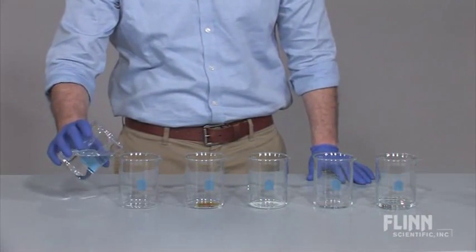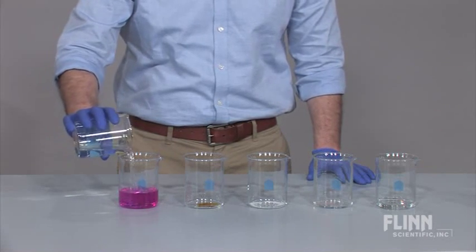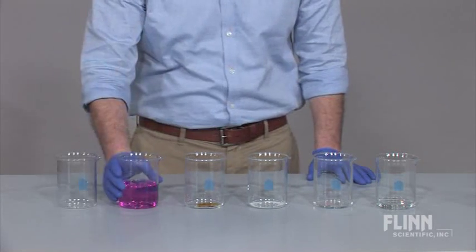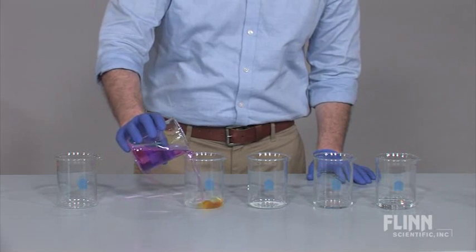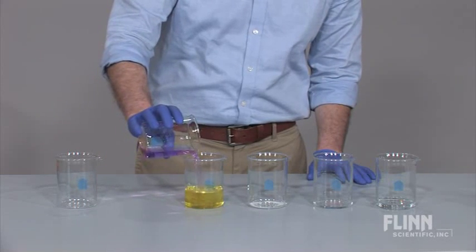Water plus phenolphthalein poured into dilute sodium hydroxide produces purple grape juice. Pour the grape juice into a beaker with sulfuric acid and a few drops of food coloring to form lemonade.